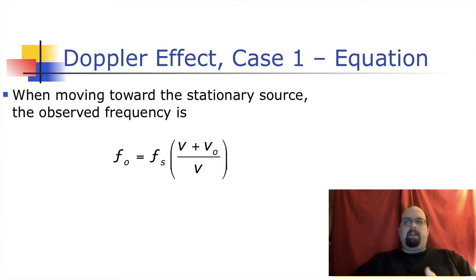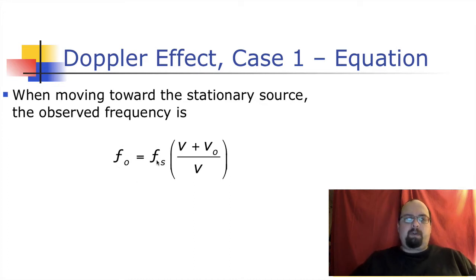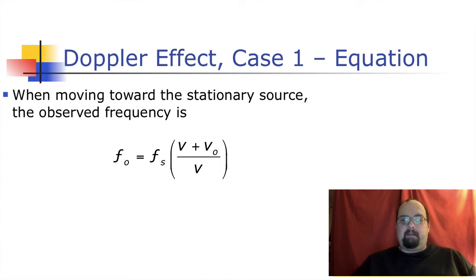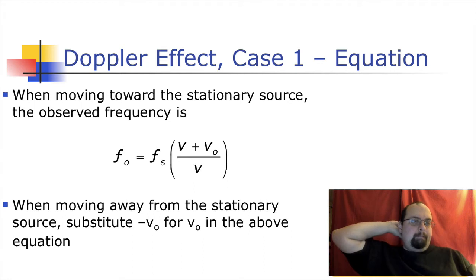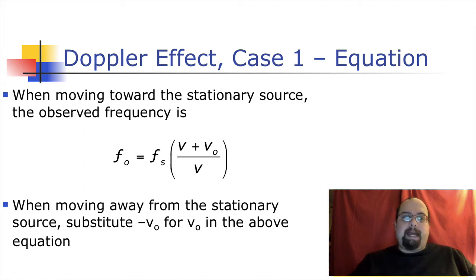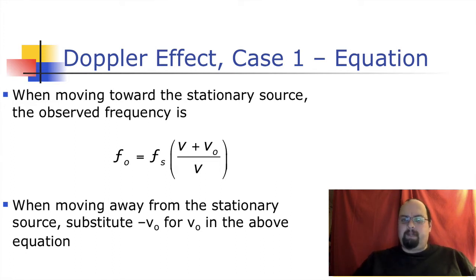So here's the math. You're moving towards a stationary source. The frequency O stands for observed, S stands for source. The frequency you observe is the frequency of the source times (V plus V₀) over V, where V is the speed of sound and V₀ is the speed of the observer moving towards the sound. If you're moving away from the source, you substitute minus V₀ rather than plus V₀ to get the correct formula. Write that down — this is not a good one to try to remember from memory.